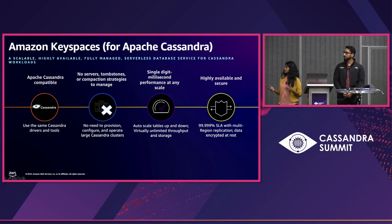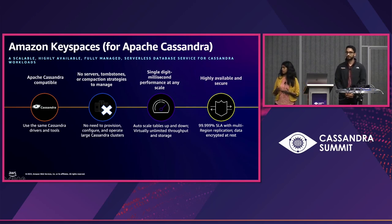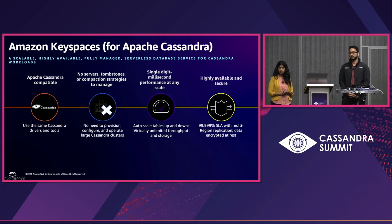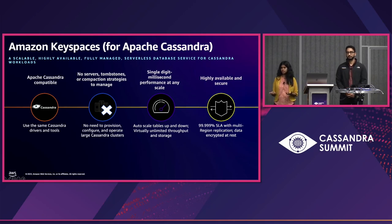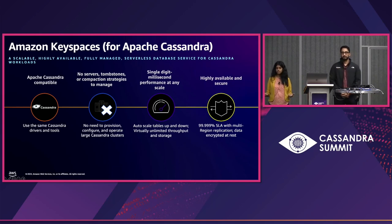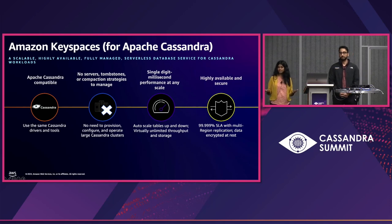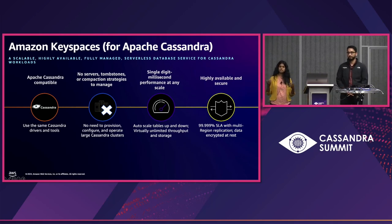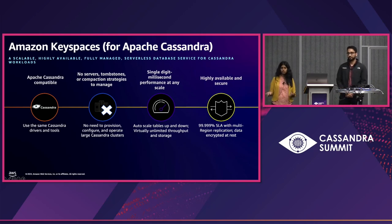At virtually unlimited size, you still get single-digit millisecond performance. It's highly available — we provide a 5-nine SLA with multi-region replication and a 4-nine SLA for single-region keyspace tables. It integrates with many AWS services: IAM for authentication, KMS for encryption keys, and CloudWatch for metrics such as throttling and performance, which you can use to build dashboards.